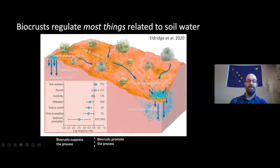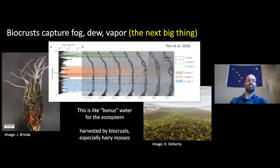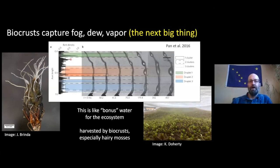These are pretty big effects. Since these are the dry parts of the world, they're obviously pretty important because water is what limits these ecosystems, and bio crusts seem to control a lot of the levers. A third thing related to water is that bio crusts can capture fog, dew, and vapor. There aren't a ton of studies on this, but I think this might become the next big thing in terms of ecosystem function of bio crusts.